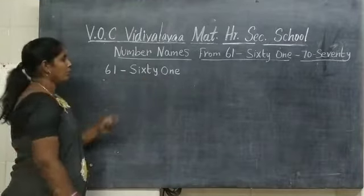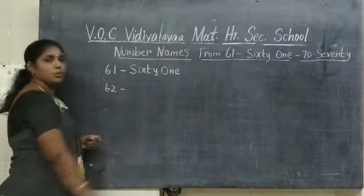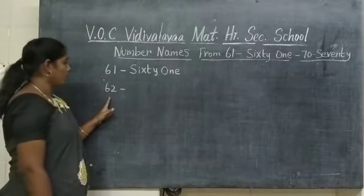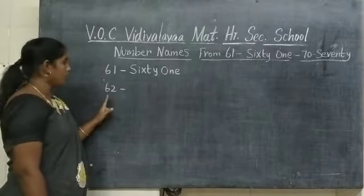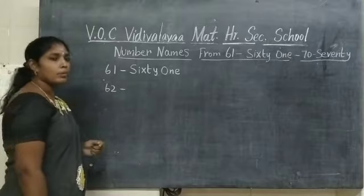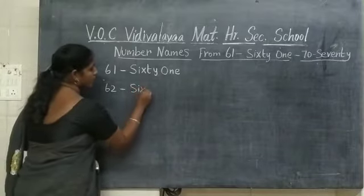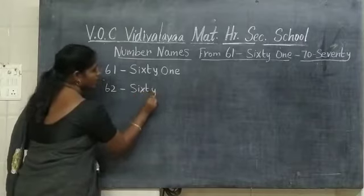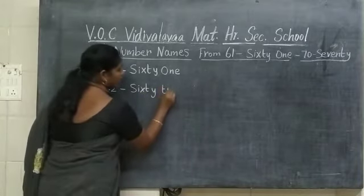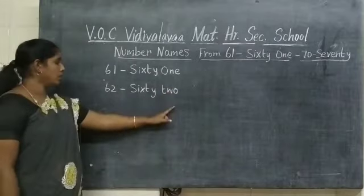The next number is 6, 2 — 62. What number is this? 62. What is the spelling of number 62? S-I-X-T-Y T-W-O. 62.